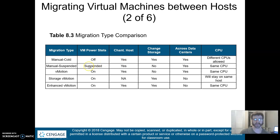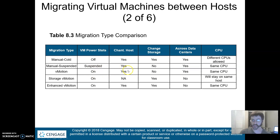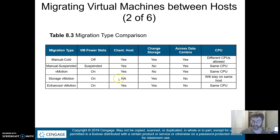With manual suspended, you can change the host but not the storage. You can change it across data centers, but it needs to have the same kind of CPU. With vMotion, it's powered on — you're changing host but not storage, you can move it between data centers, and it requires the same kind of CPU. With storage vMotion, you are not changing hosts, you are changing storage, you do not move it between data centers, and it stays on the same host, so the question of CPU type is irrelevant.